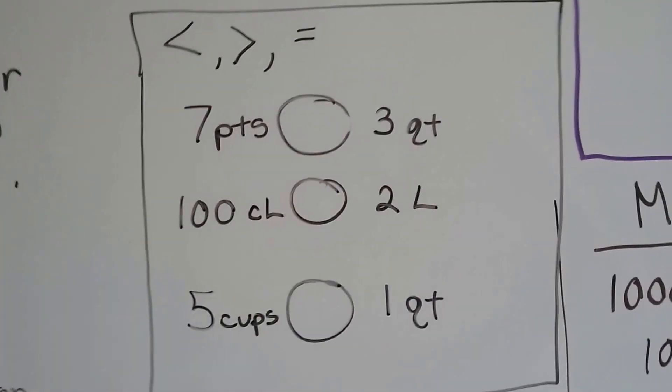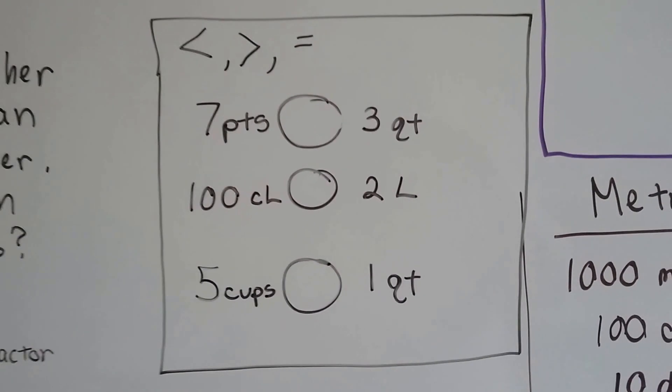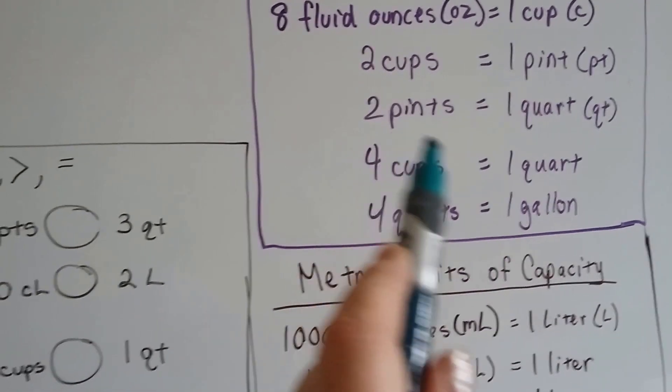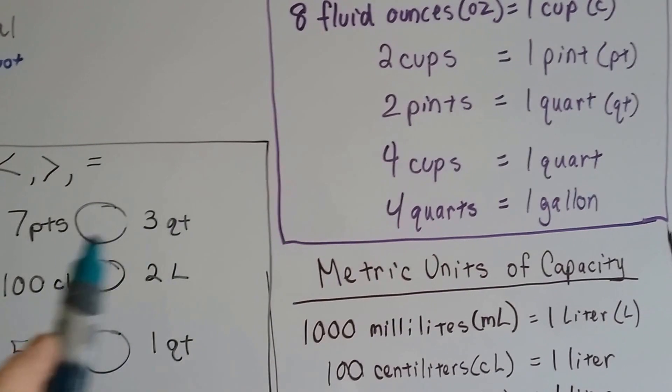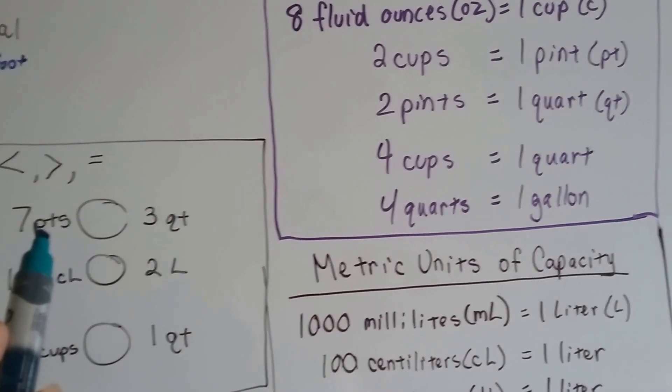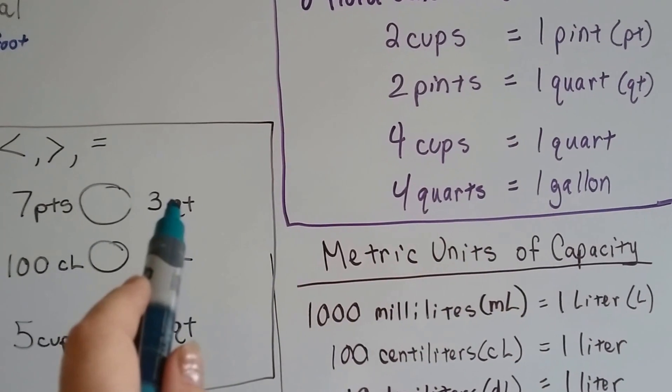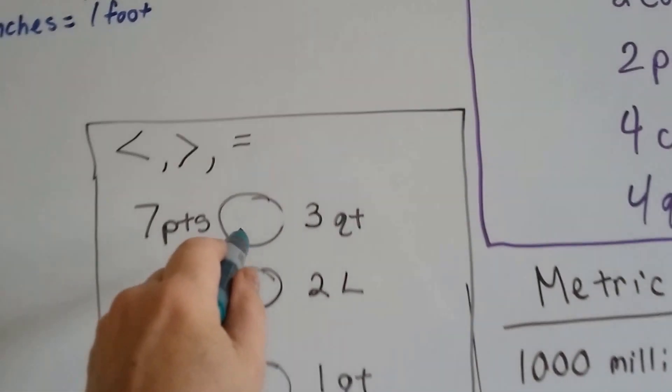If we had these less than, greater than, and equal to symbols, which is bigger: 7 pints or 3 quarts? Or is it equal? Well, 1 quart is 2 pints. So what would 7 pints be? 6 pints would be 3 quarts. So 7 pints is definitely bigger.